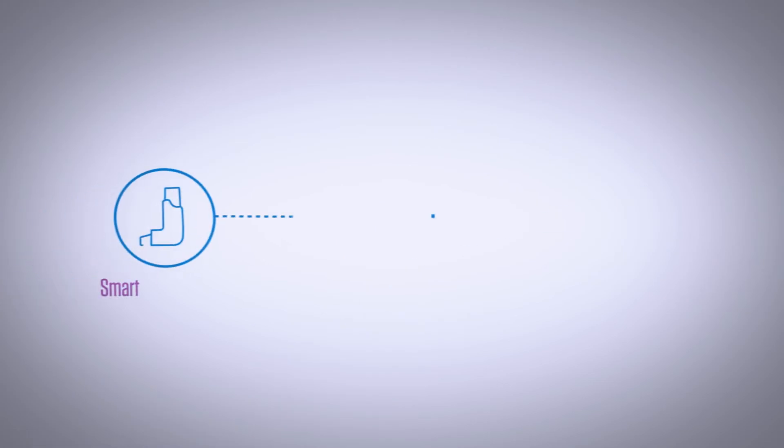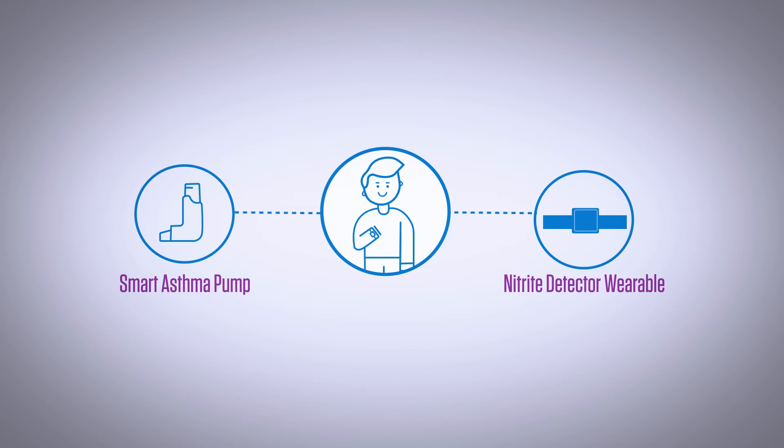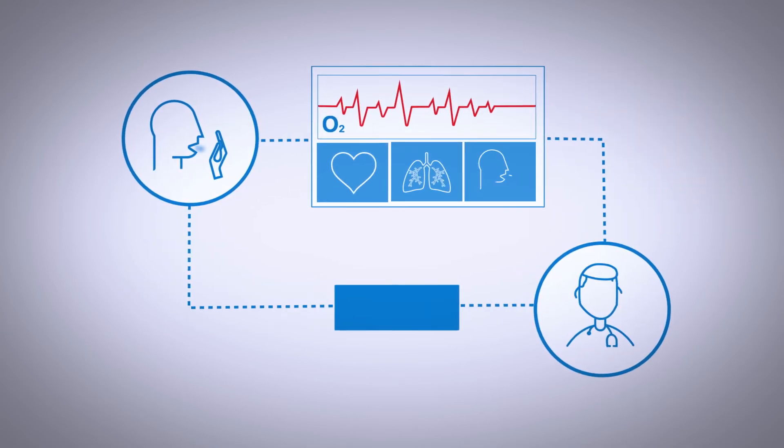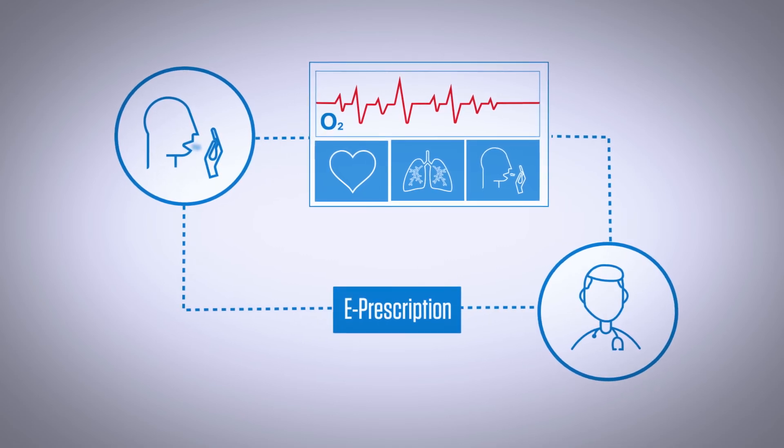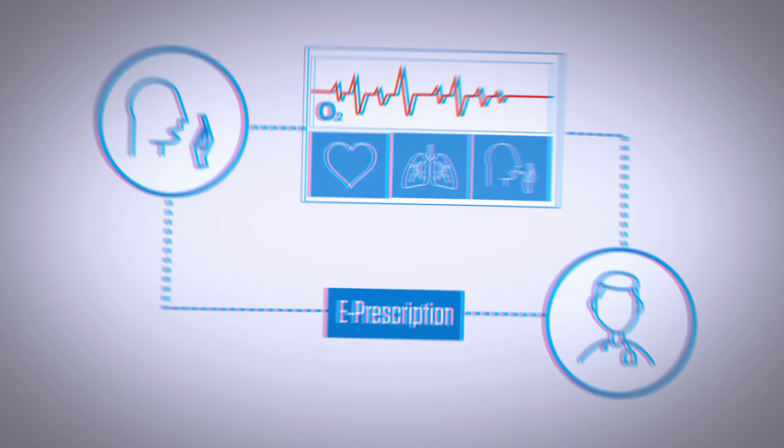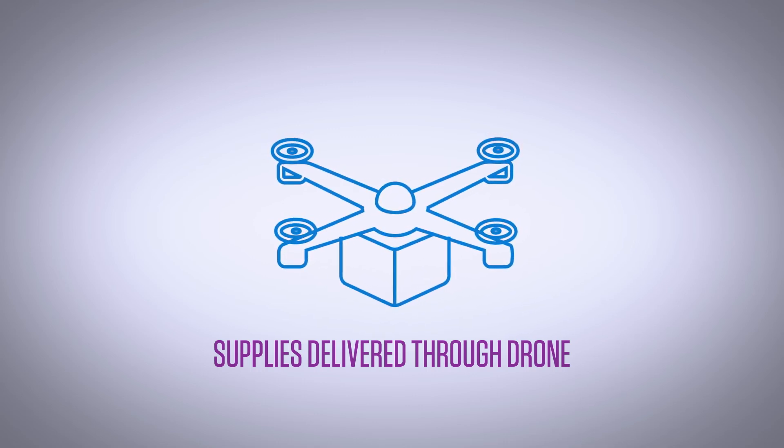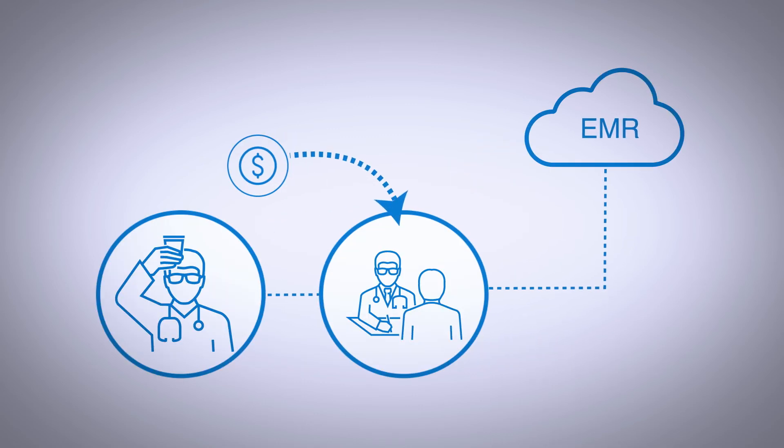He was advised to use a smart asthma pump and a nitrate detector wearable by the pulmonologist. He just needed to breathe into the wearable and the reading could decide a teleconsultation followed by an e-prescription, with all his supplies delivered through drones and service providers getting auto-reimbursed.